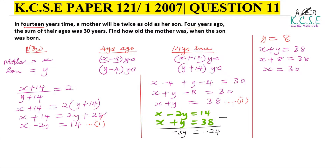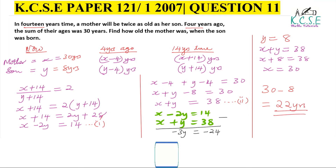We've obtained the values: x equals 30 and y equals 8. So right now the mother is 30 years old and the son is 8 years old. To find how old the mother was when the son was born, we subtract the son's current age from the mother's current age: 30 minus 8 equals 22 years. The mother was 22 years old when the son was born. That is the solution.